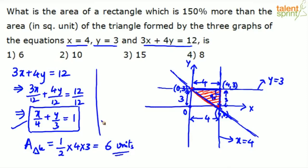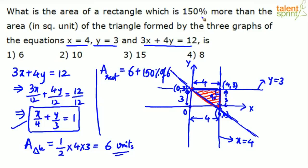Now, the area of the rectangle is 150% more than the area of the triangle. 150% more means 6 plus 150% of 6 — it is not 150% of 6 directly. Don't take 150% of 6 alone; it is 6 plus 150% of 6. 150% of 6 is 9, so 6 plus 9 equals 15 square units, which is the final answer.